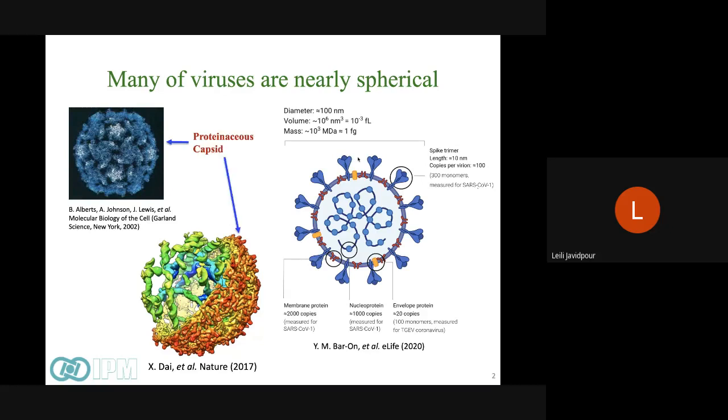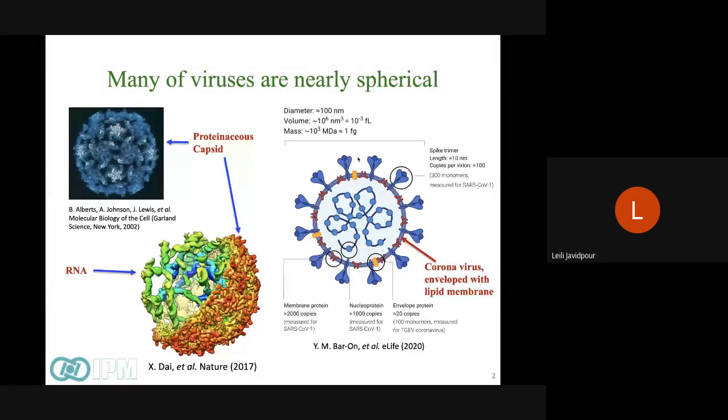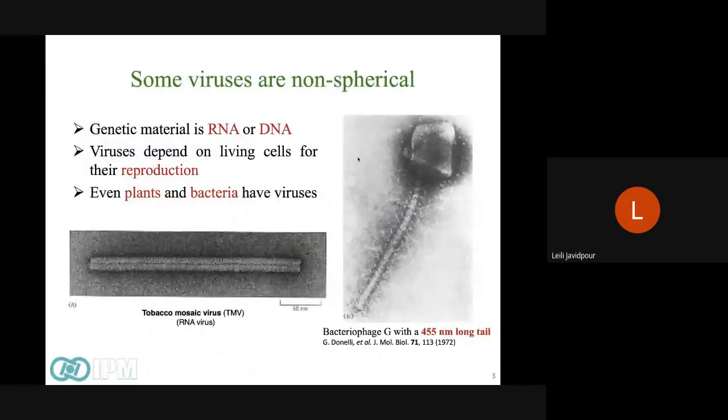Some viruses are made of capsids, which are in fact made of proteins. The proteins are encoded in the viral genome, which could be RNA or DNA. But some viruses like the famous coronavirus are enveloped by a lipid membrane, and the genome is inside this lipid membrane. They also may have spike proteins, and the HIV virus also has the same kind of strategy to infect cells.